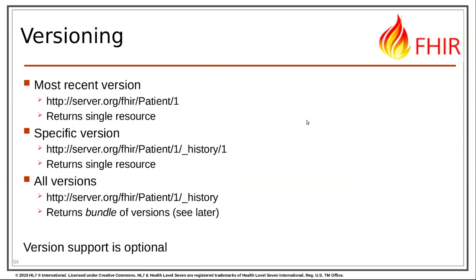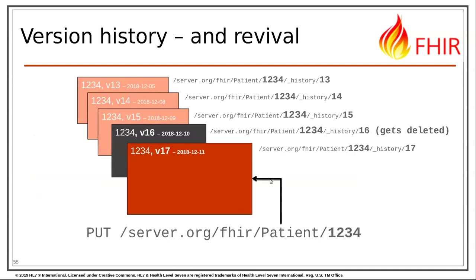FHIR also defines support for versioning — a way to fetch historical changes to a resource over time. When updates happen to a specific resource, FHIR defines an API to see what that resource looked like at a particular point in history. In servers that support it, you can look for information about a specific resource at any point in its history. This is very powerful when working with systems where data changes over time and you want a view of information as it would have looked in the past.